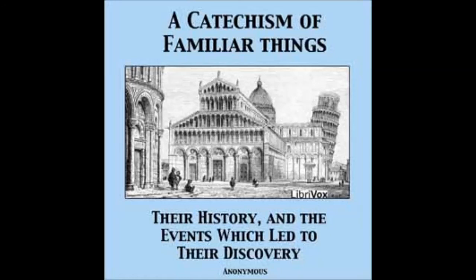Did the citizens of Constantinople confine their trade to the islands of the archipelago, and the adjacent coast of Asia? No, they took a wider range, and followed the course which the ancients had marked out, imported the productions of the East Indies from Alexandria. When Egypt was torn from the Roman Empire by the Arabians, the industry of the Greeks discovered a new channel by which the productions of India might be conveyed to Constantinople.